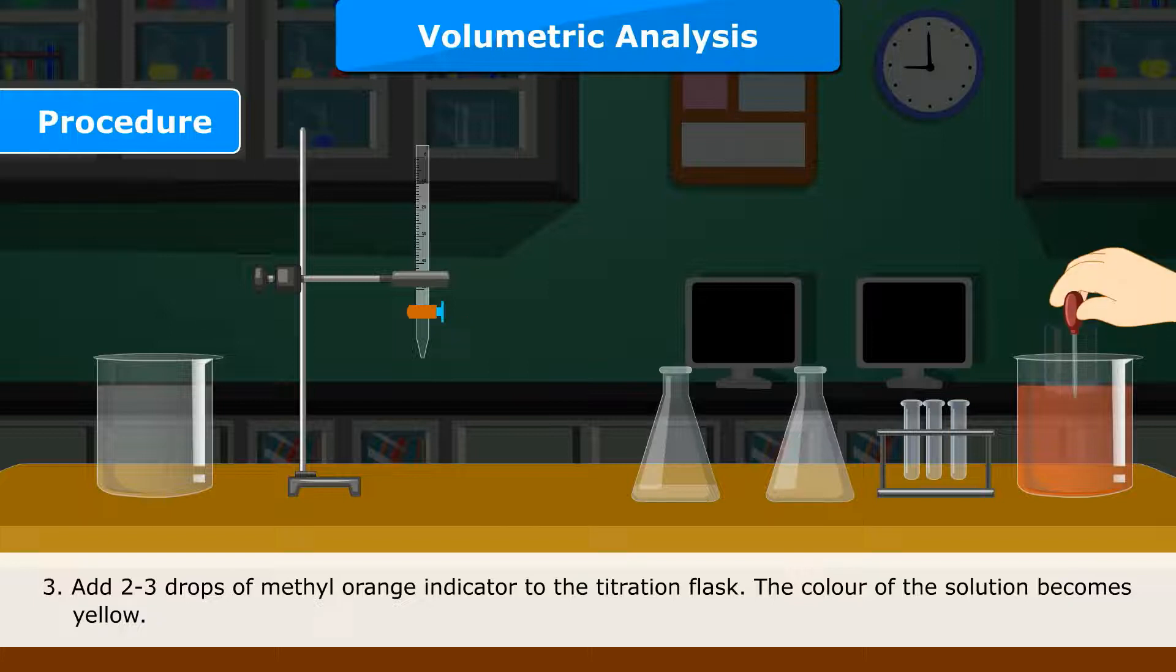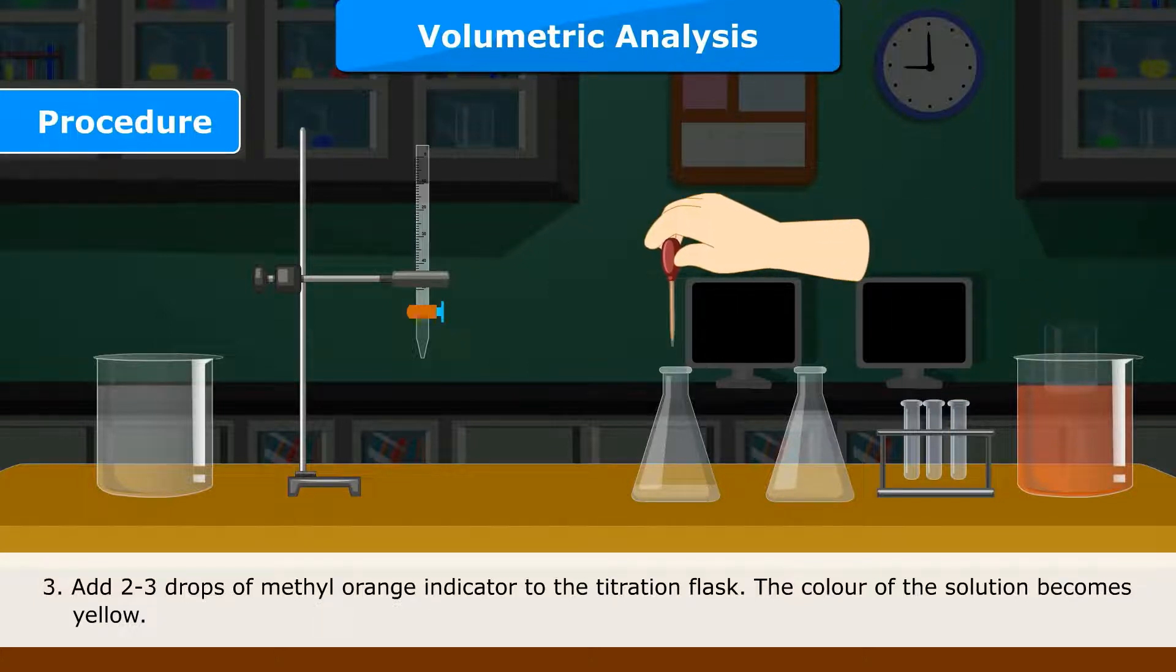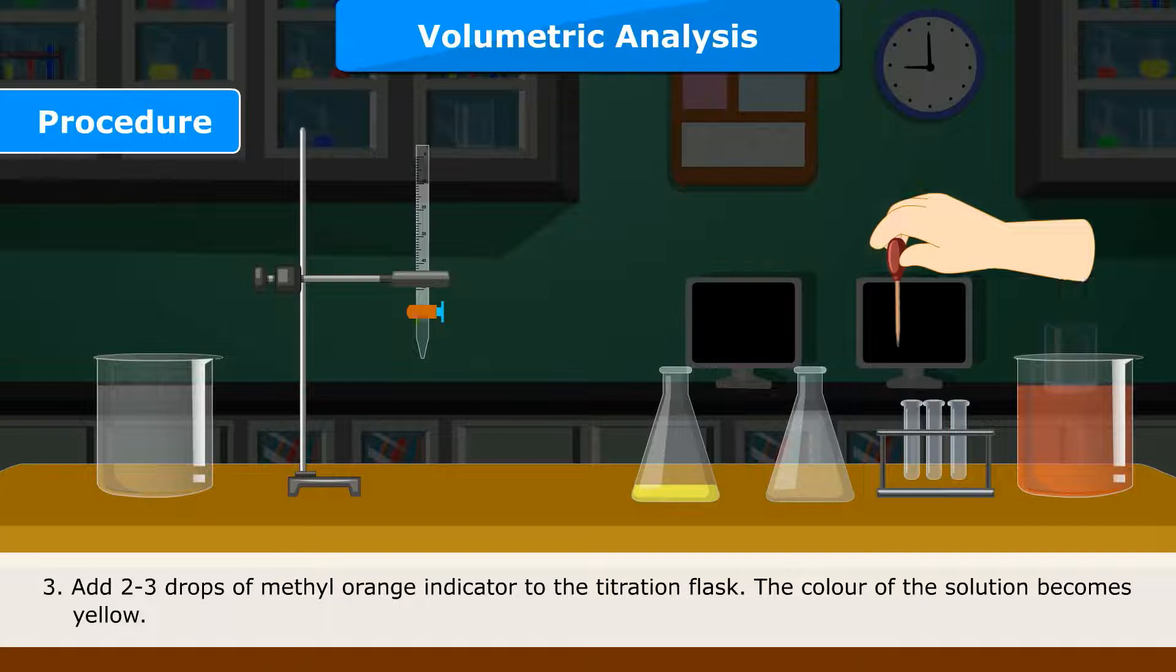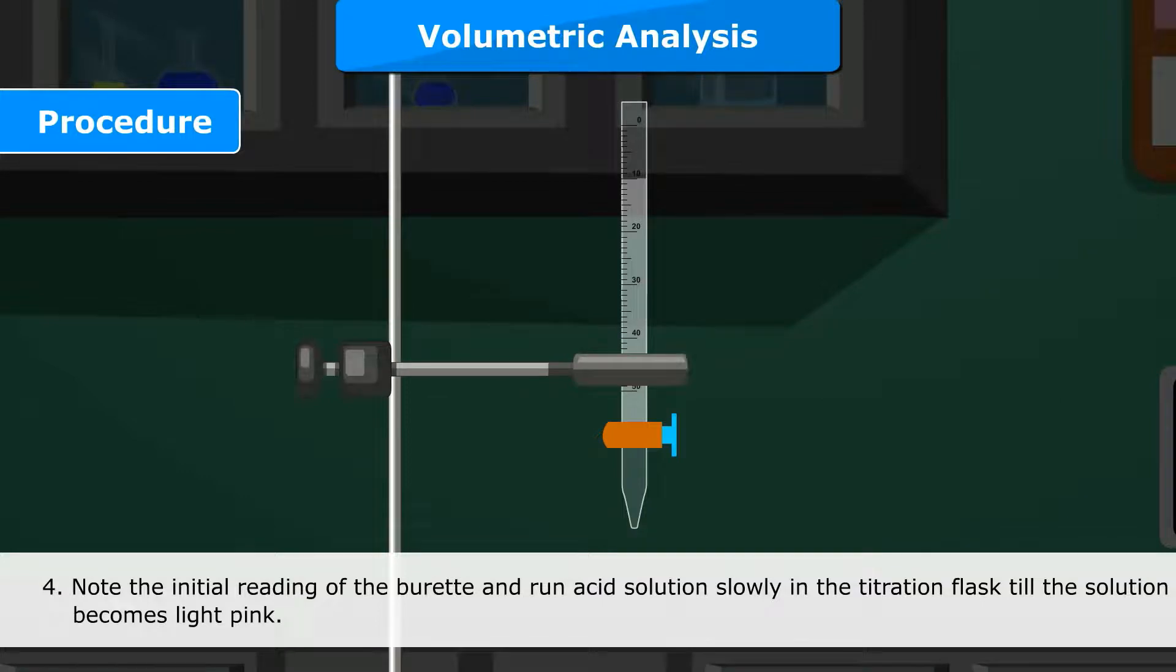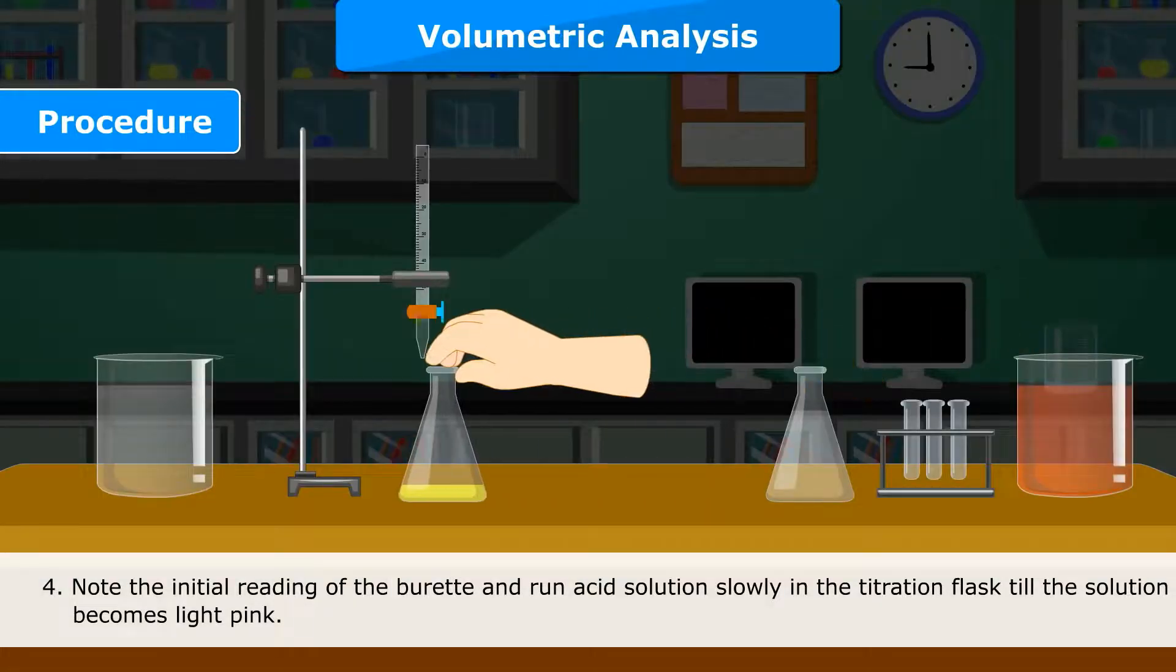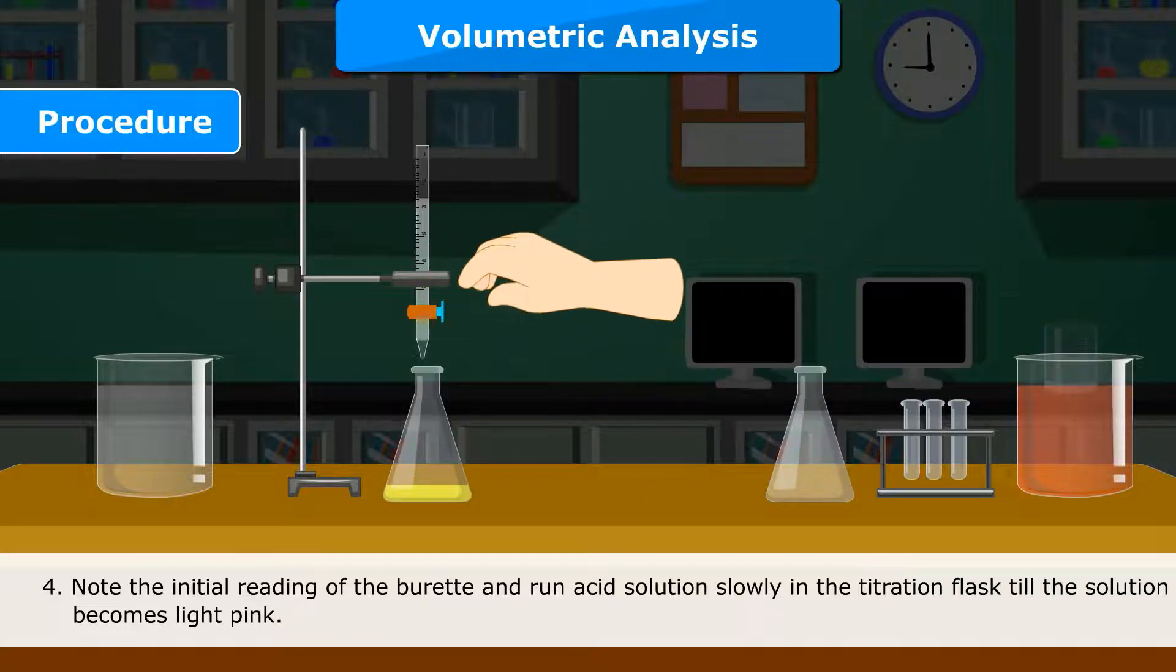Add 2-3 drops of methyl orange indicator to the titration flask. The color of the solution becomes yellow. Note the initial reading of the burette and run acid solution slowly in the titration flask till the solution becomes light pink.